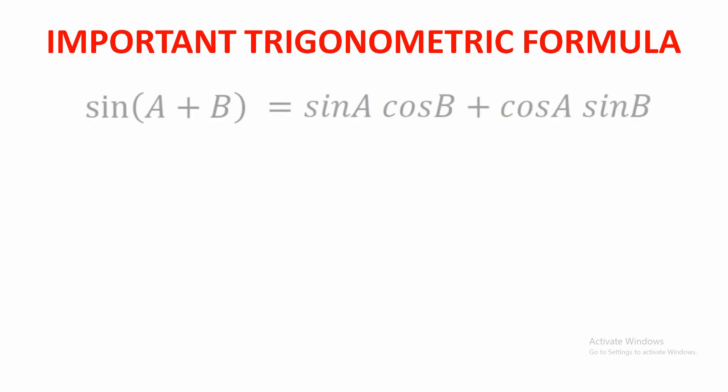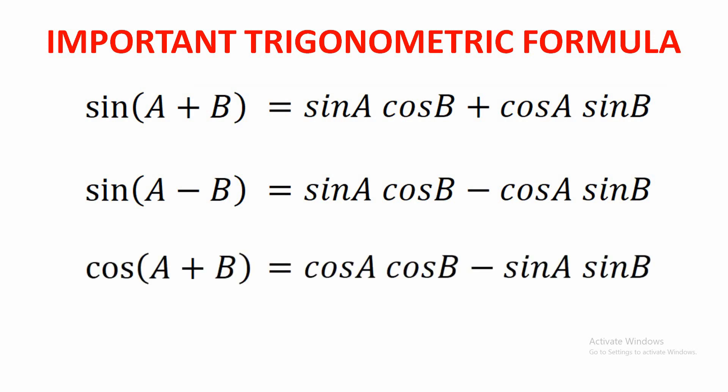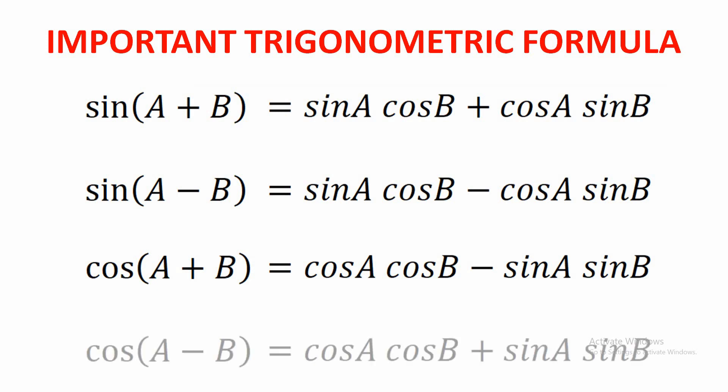The first important formula is sin(A+B) = sin A cos B + cos A sin B. This is the most common trigonometric addition formula. The second formula is sin(A−B) = sin A cos B − cos A sin B. Similarly, cos(A+B) = cos A cos B − sin A sin B, and cos(A−B) = cos A cos B + sin A sin B. These are the important formulas you should remember before approaching this question.